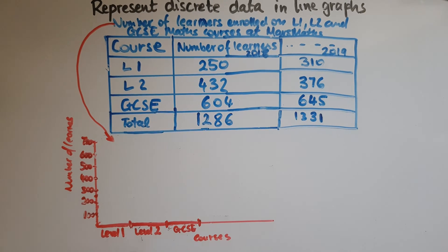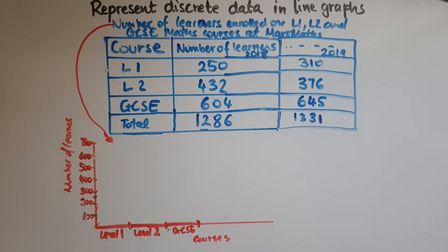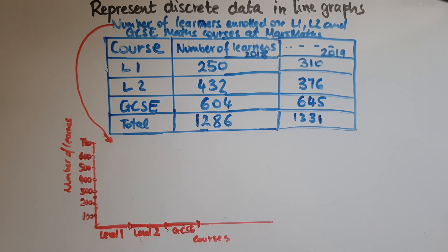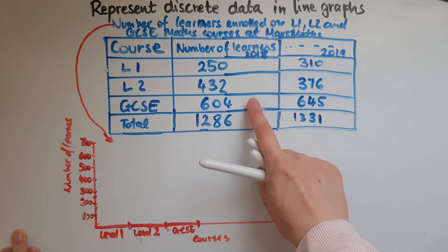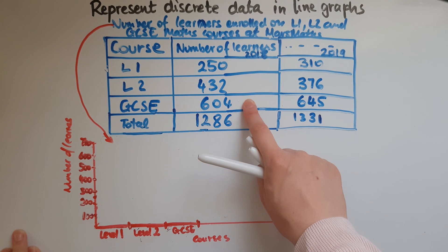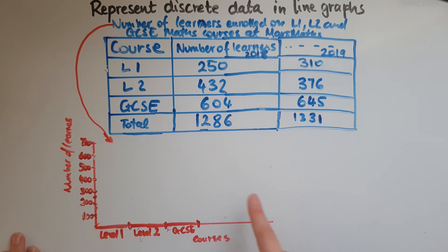I've kept the same axes I used for the bar chart — that's exactly the same way we do it for line graphs. We've got level one, level two, and GCSE — all courses — on the horizontal axis. The vertical axis is labelled 'number of learners,' going up in 100s: 100, 200, 300, 400, 500, 600, 700, because the highest value we have is 604 for the 2018 learners.